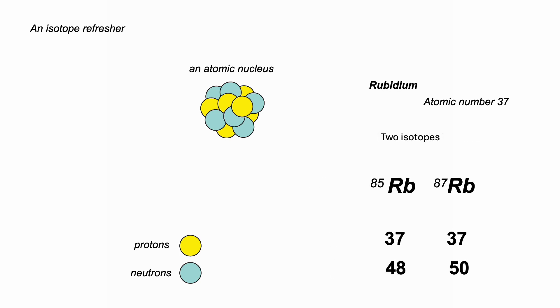Rubidium, on the other hand, atomic number 37, has these isotopes. And 87 rubidium with 50 neutrons is unstable. It's radioactive.